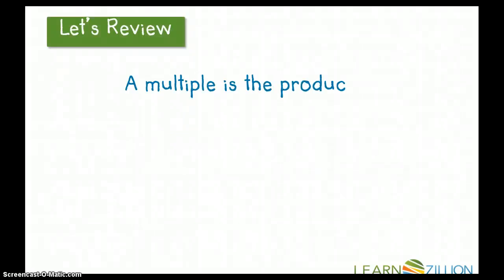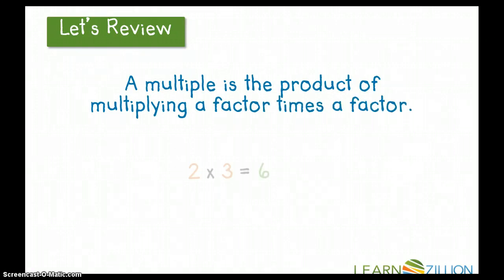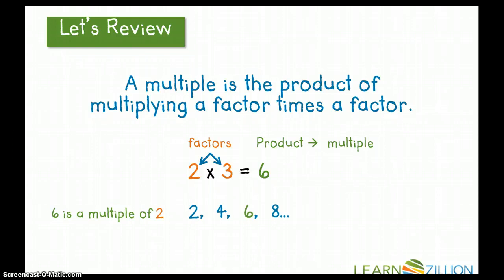Let's review. A multiple is the product of multiplying a factor times a factor. Two times three equals six. Two and three are my factors, and six is my product. Six is also a multiple. Six is a multiple of two. When I count by twos, six is my third multiple: two, four, six. Six is also a multiple of three. When I count by threes, six is my second multiple.